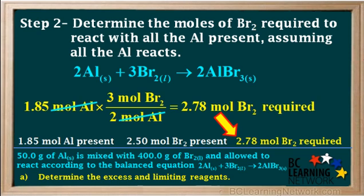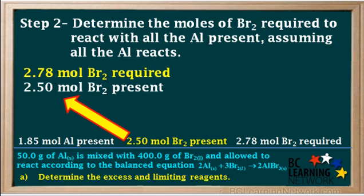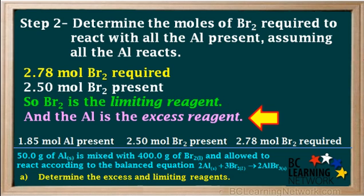We see that 2.78 moles of bromine are required, but we only have 2.50 moles of bromine available. Therefore, we don't have enough bromine to react with all the aluminum present — some aluminum will be left unreacted. Since there isn't enough bromine, bromine is the limiting reagent, and aluminum, which is in excess, is the excess reagent.